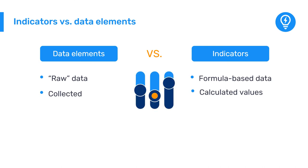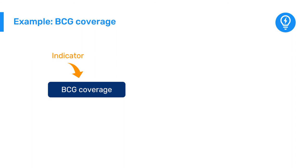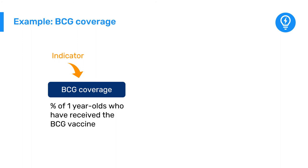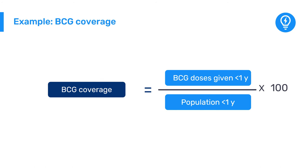Customization of data elements and indicators is a key aspect of designing a DHIS2 system. Let's have a look at a real example by reviewing the indicator BCG coverage. In order to create this indicator, which calculates the percentage of one-year-olds who have received the BCG vaccine, we are taking two data elements as our source values: the number of BCG doses given to those aged less than one year as the numerator, and the total population less than one year as the denominator.